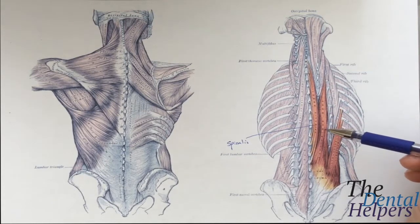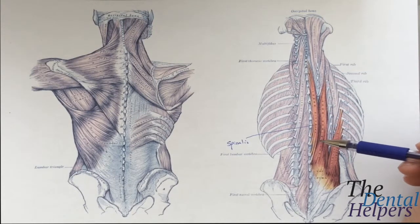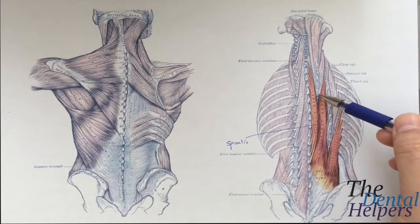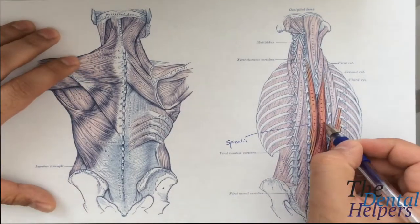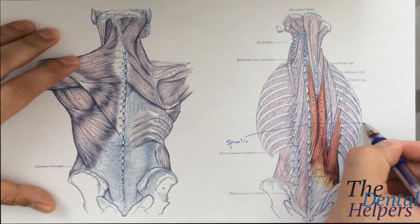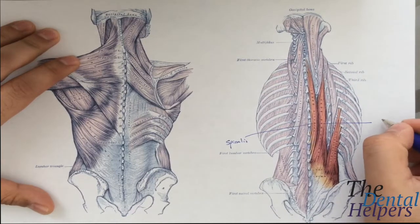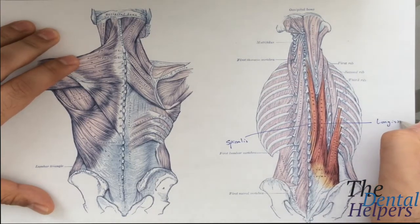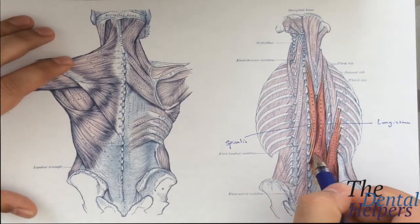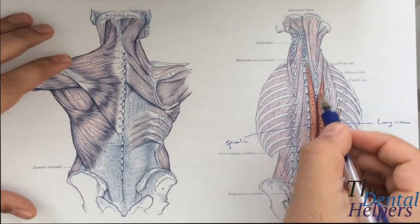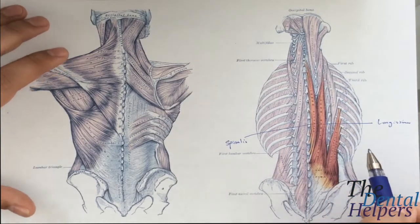The spinalis fibers are short, running from the lumbar to the thoracic spinous processes. The next muscle, going a little more lateral, is this middle one — the longissimus. Of the three, it's a bigger and longer muscle, so just remember: it's the longissimus.